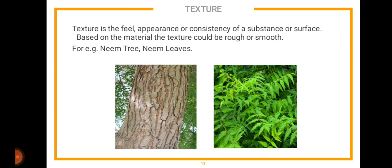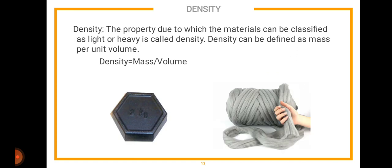Next up we have texture. Texture is the feel, appearance, or consistency of a substance or surface. Based on the material, texture could be rough or smooth. The best example is the neem tree: if you touch the bark, it will be very rough, but if you touch the leaves or the seeds, you will find them very smooth. So the bark is rough and the leaves are smooth — that is texture.